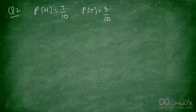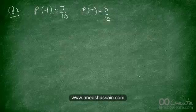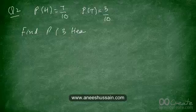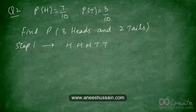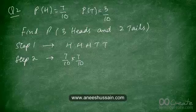Now let's take this example a step further and see what happens when we are not asked to get heads and tails in any specific order. The question says: we have a biased coin where the probability of getting a head is 7 out of 10 and the probability of getting a tail is 3 out of 10. What is the probability of getting exactly three heads and two tails? We will apply a three-step method for cases where order is not specified. Step one: write down one particular favorable outcome — head on the first throw, head on the second, head on the third, tail on the fourth, and tail on the fifth.